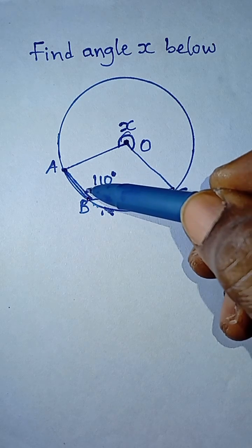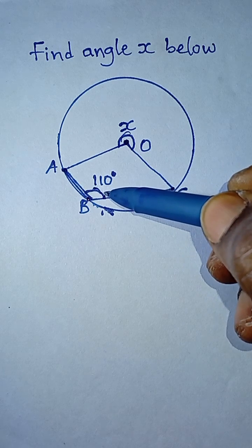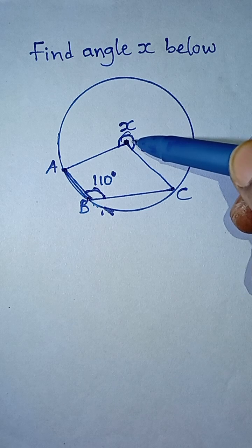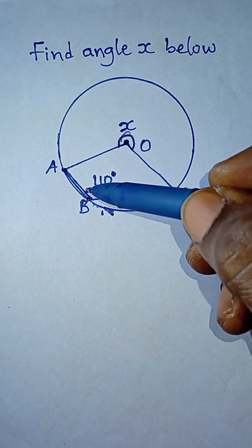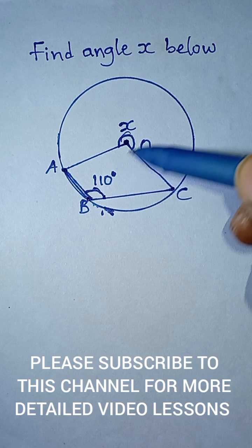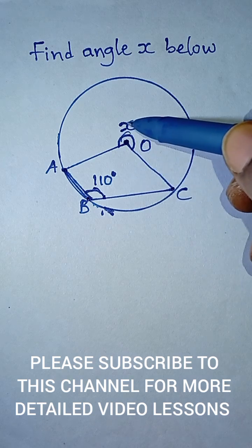So that tells us that this angle 110 multiplied by 2 will give us angle X. Don't forget this 110 has angle at the center which is on the corresponding side.